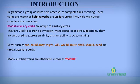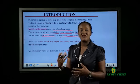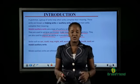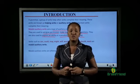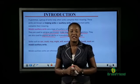Now let's define modal auxiliary verbs. Modal auxiliary verbs are a type of auxiliary verbs that are used to ask or give permission, make requests, or give suggestions. They are also verbs used to express an ability or a possibility to do something. They are used to give permission, ask for permission, show an ability to do something, show a possibility, make suggestions or give advice, and make offers.